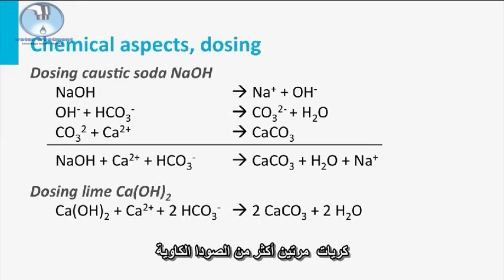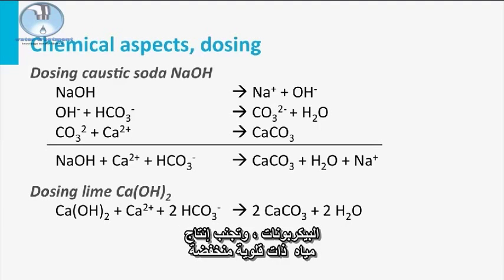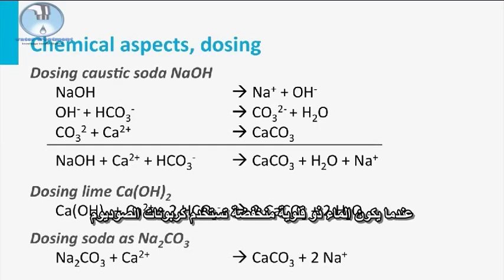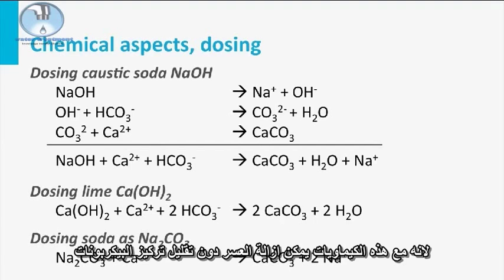Lime is therefore only used in case of waters with high sodium concentration and a high bicarbonate concentration, avoiding the production of low alkalinity waters. When water has a low alkalinity, soda ash is used, because with this chemical the water can be softened without a decrease in bicarbonate concentration.